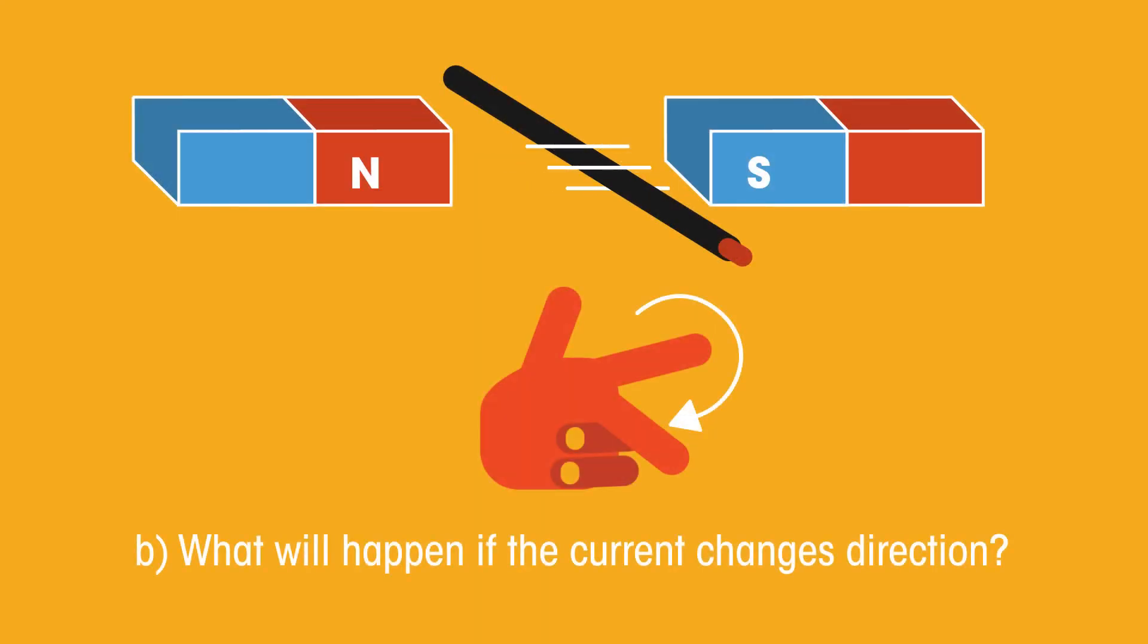For B, the current has changed direction, so you need to rotate your hand around.